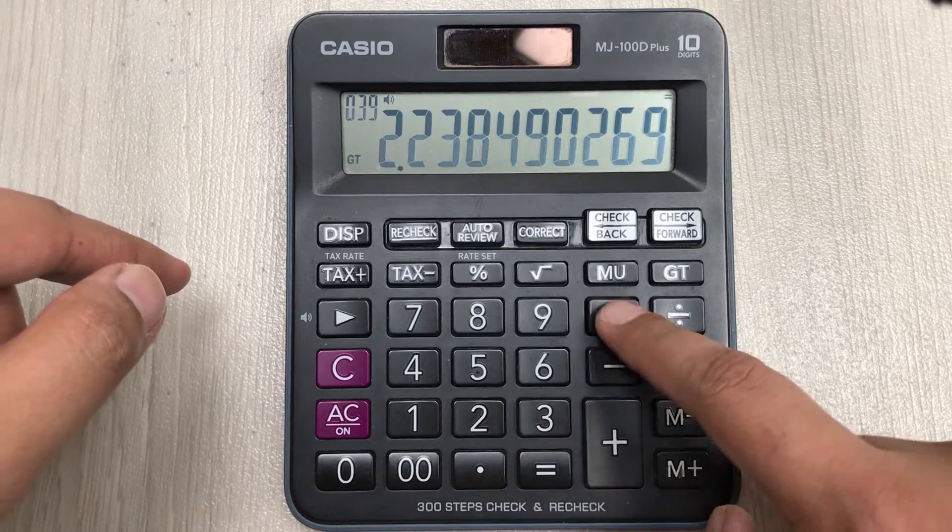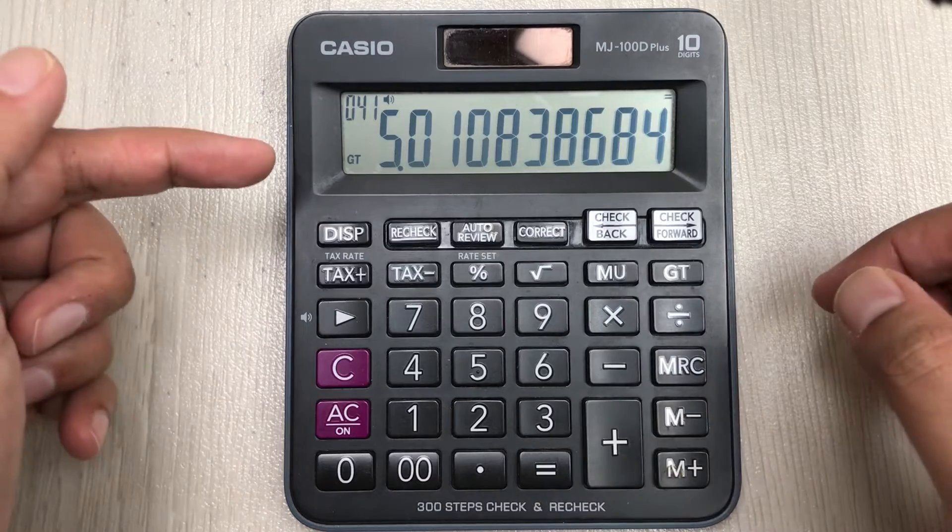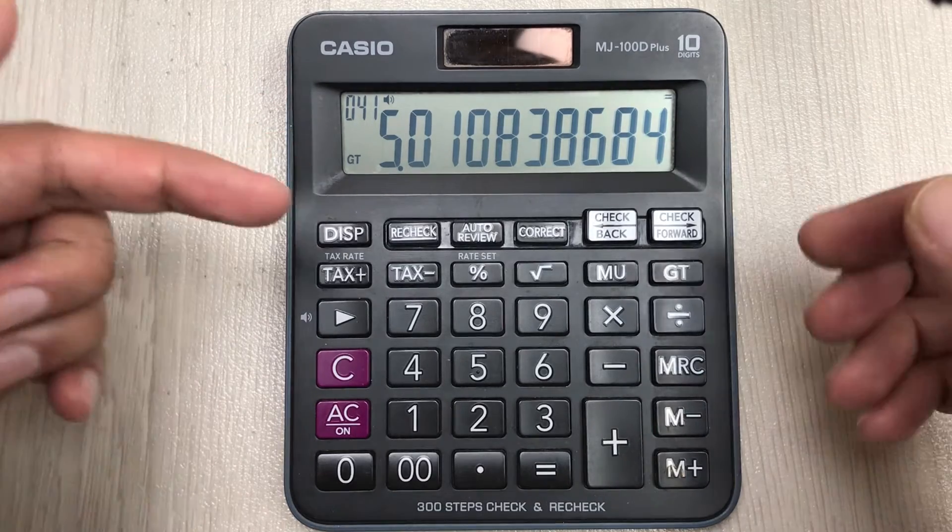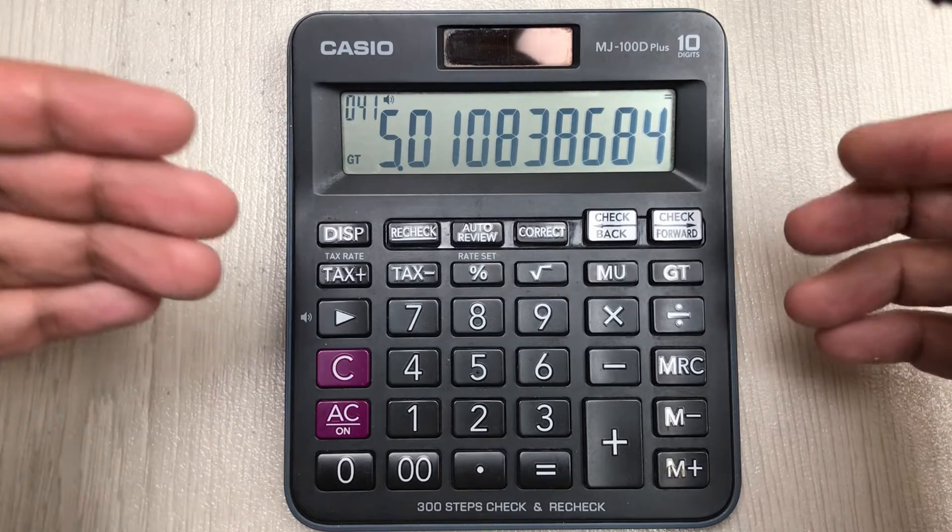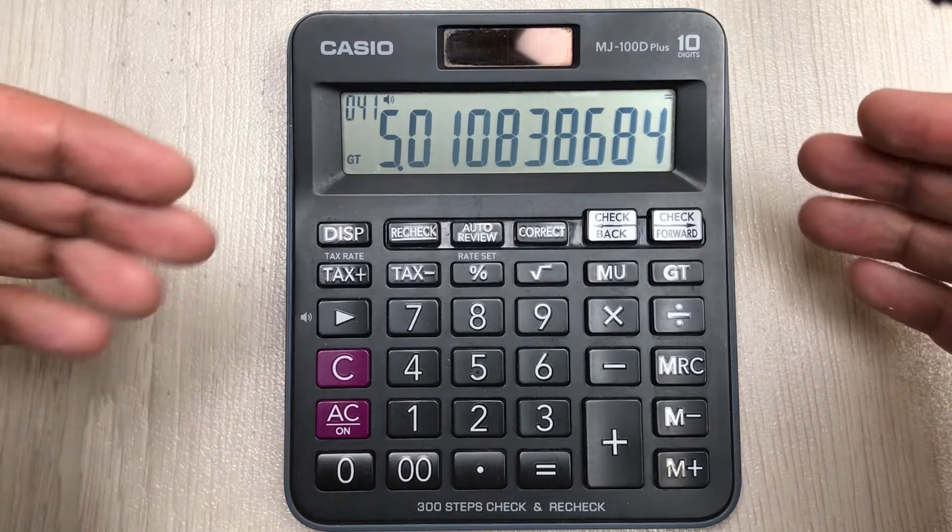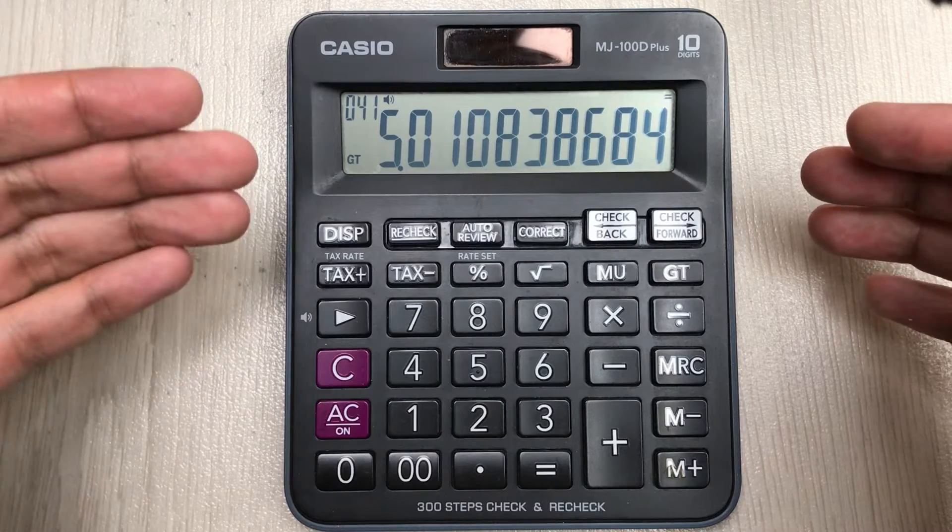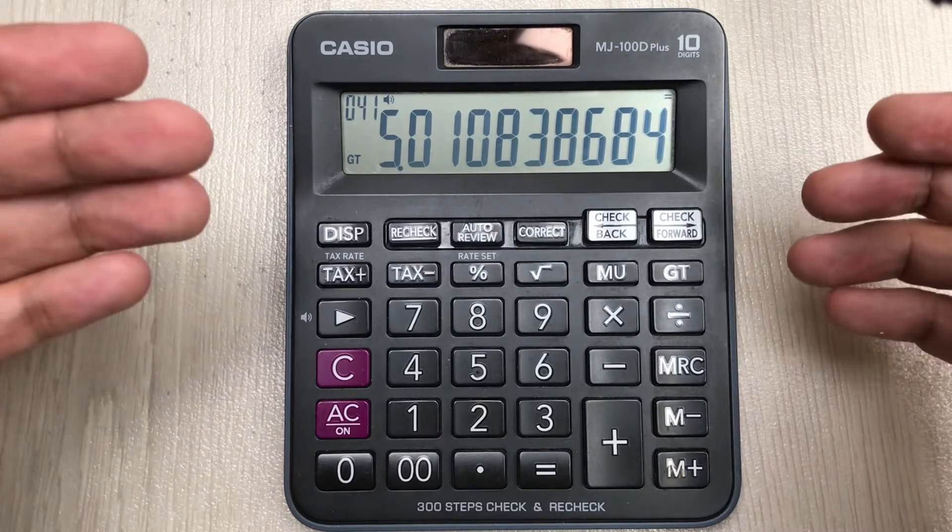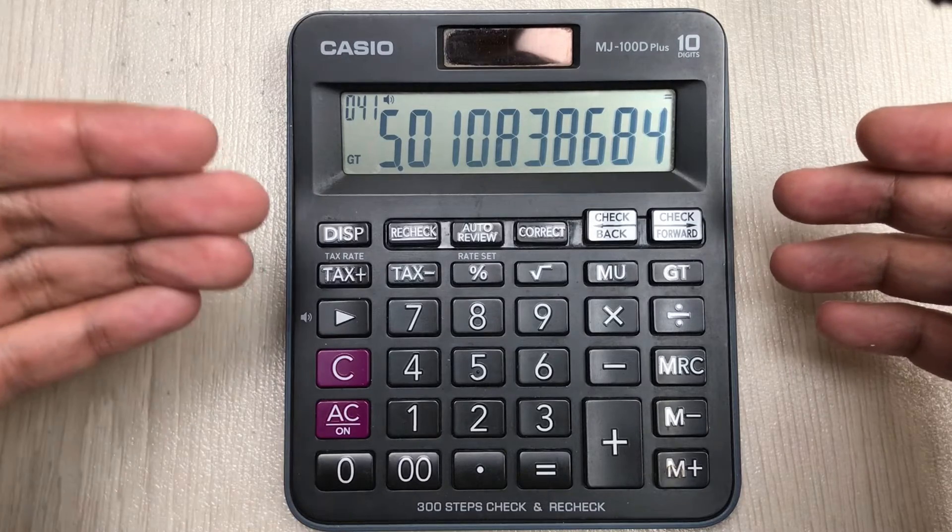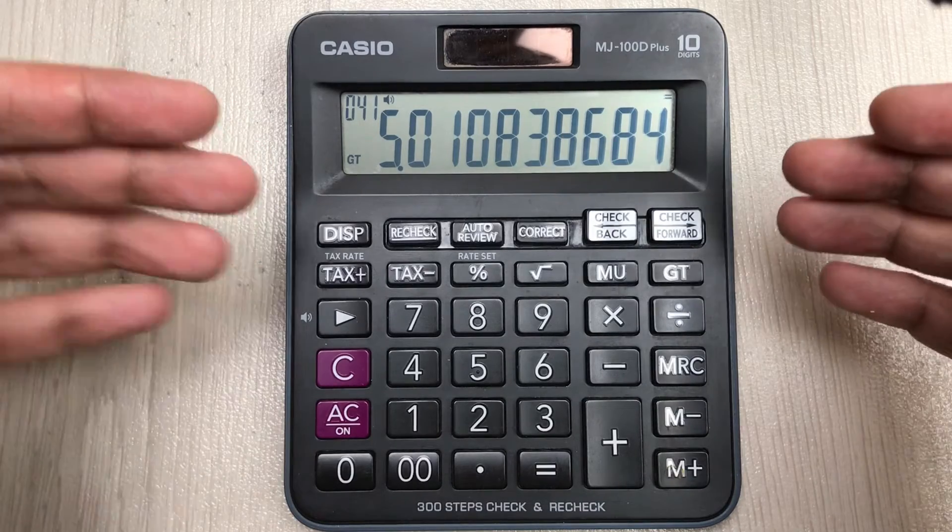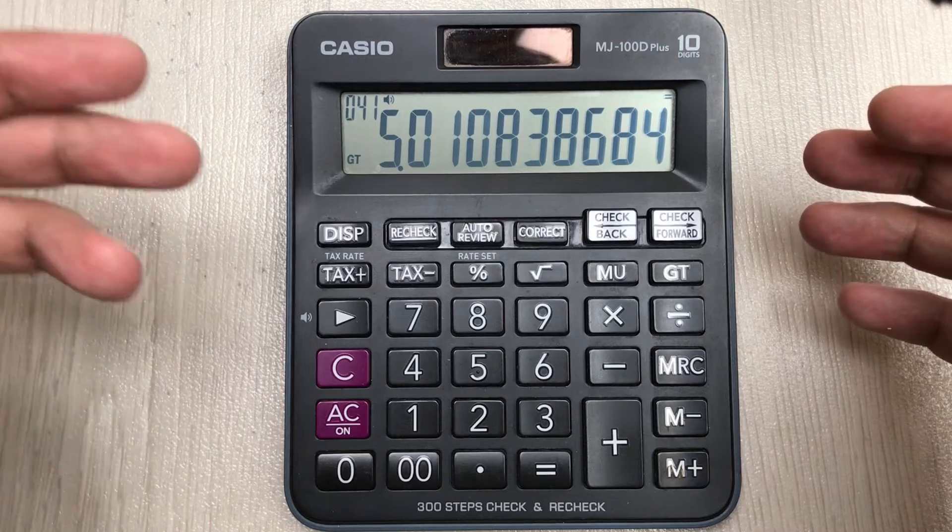So guys, here is our answer. This is the final answer. This is the anti-logarithm for 0.700. This is how you can find out the anti-logarithm of any number using these four simple steps.